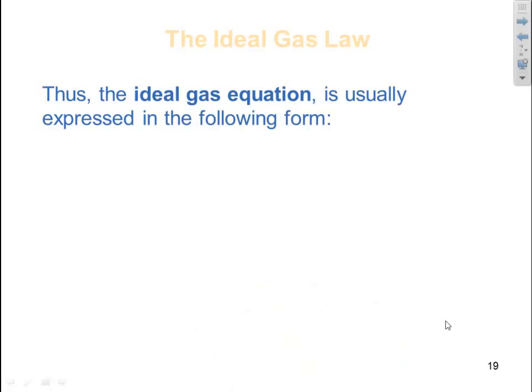Thus, the ideal equation is usually expressed in the following format: PV is equal to nRT, the ideal gas law.